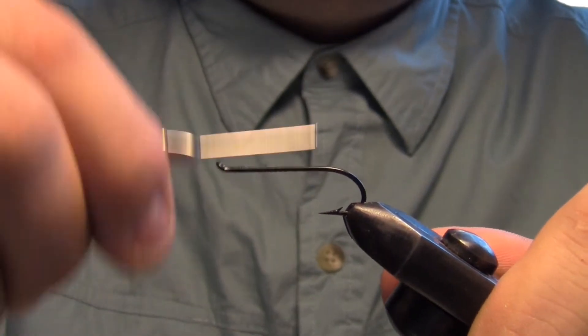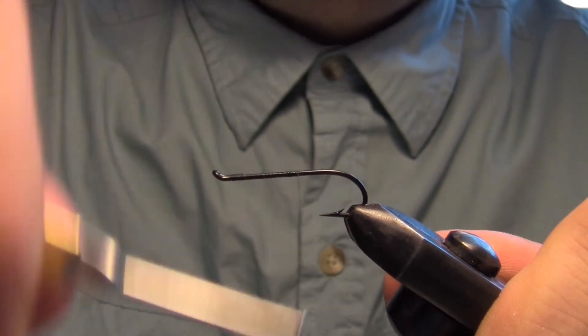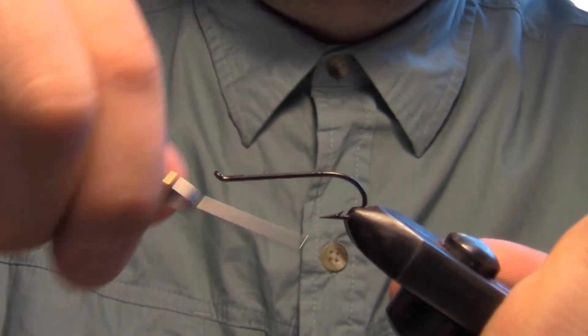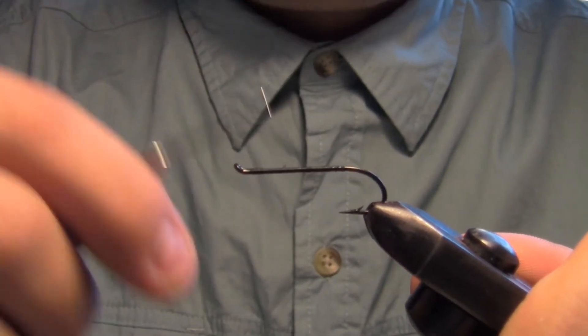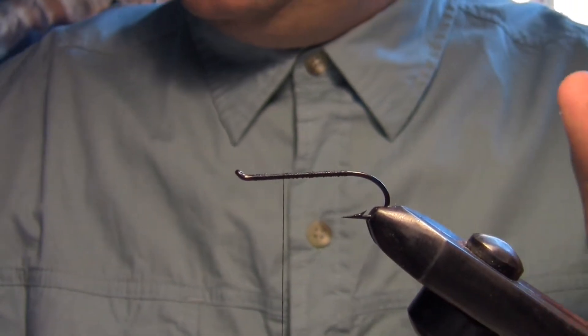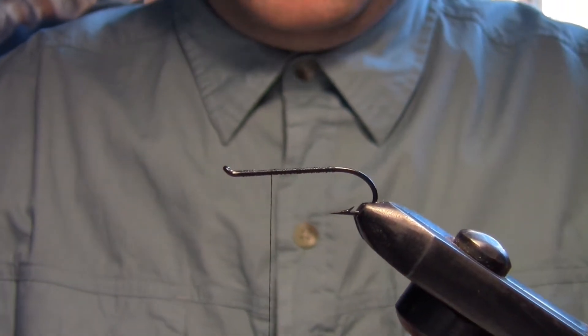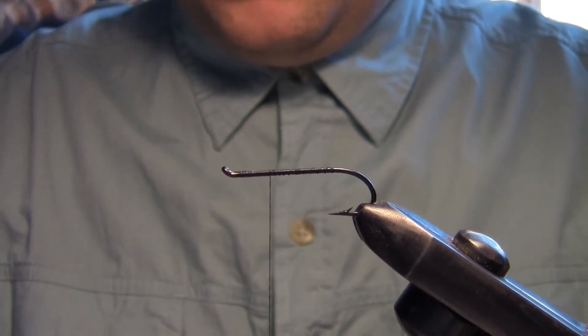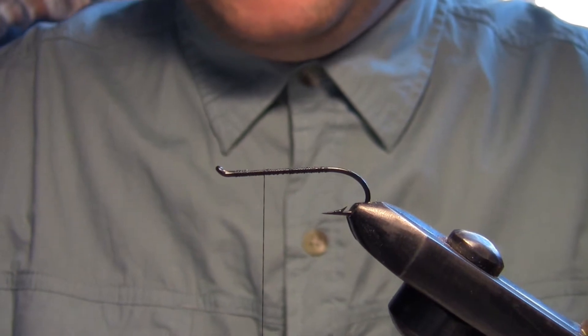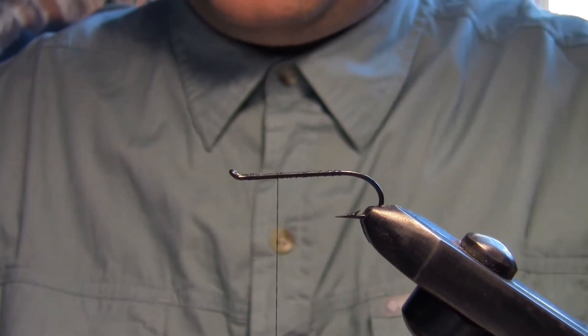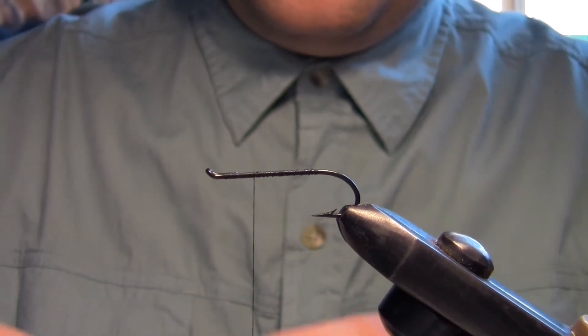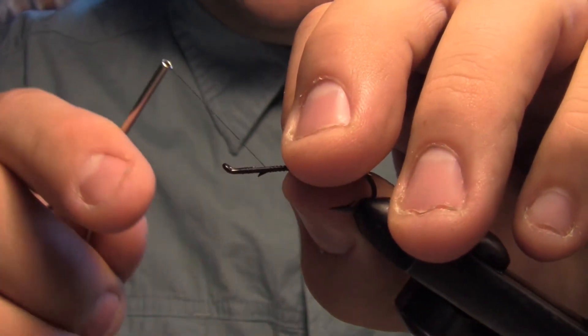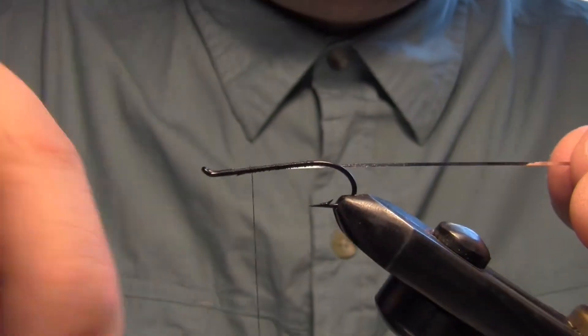I like to put down a base of thread. Some people, you know, choose what you like to do, whatever tickles your fancy. I'm going to tie in a little bit of number 14 tinsel, put a little bit of tinsel at the back there at the butt. Again, I'm going to run my tinsel right through my body just to give it a little more strength.